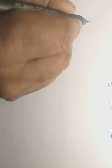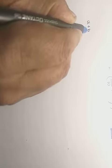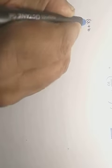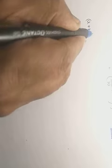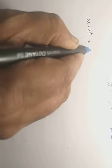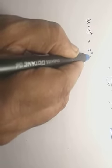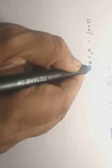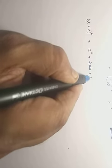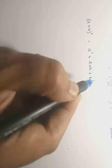Dear students, in this video we will understand how (a + b) whole square is equal to a² + 2ab + b² can be obtained.